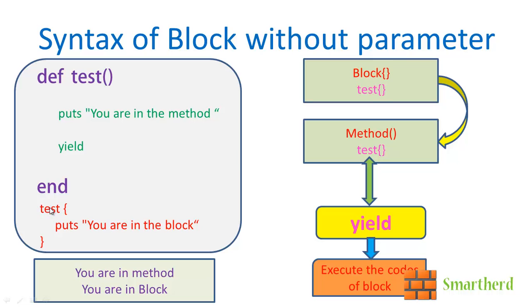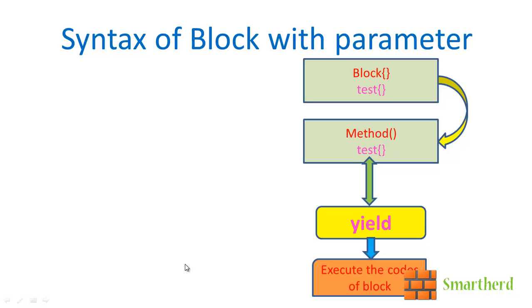So this test is encountered. This will call this method test. Then you are in the method, this is printed here. Then after that yield is encountered, and yield will execute the codes between the curly braces, which is you are in the block. Quite simple. Hope the concepts are now getting clear.